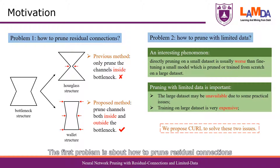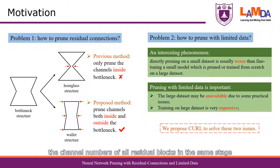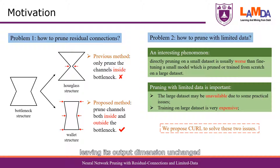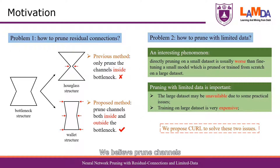The first problem is about how to prune residual connections. Due to the existence of short connections, the channel numbers of all residual blocks in the same stage need to be consistent in order to finish the sum operation. Hence, pruning residual connections is very difficult. Most previous methods only focus on reducing channels inside the residual block, leaving its output dimension unchanged. Obviously, the representation ability of middle layers inside the hourglass structure is limited. We believe pruning channels both inside and outside the bottleneck is a better choice.